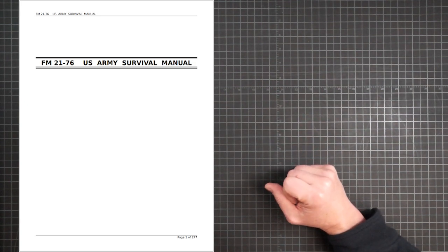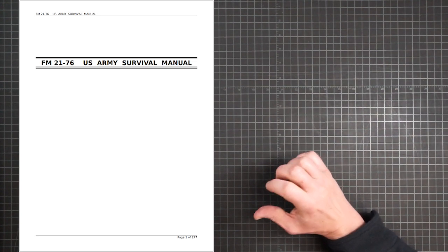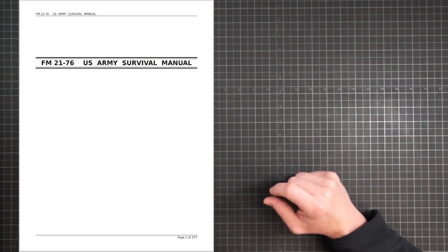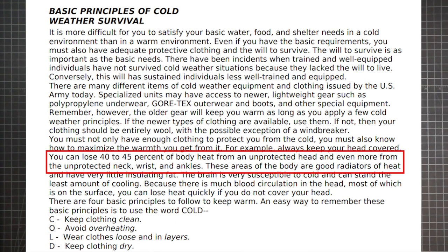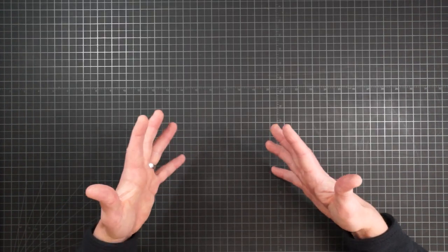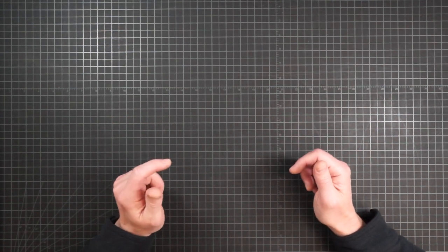From the US Army survival manual in the section on basic principles of cold weather survival, you can lose 40 to 45 percent of body heat from an unprotected head and even more from the unprotected neck, wrist, and ankles.